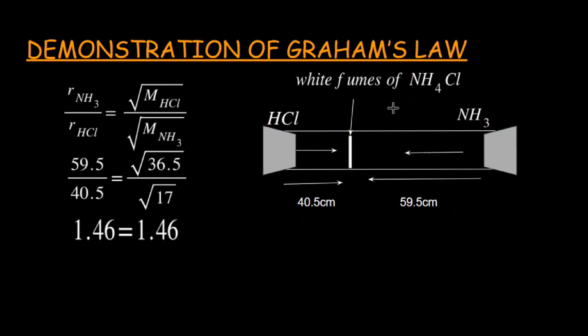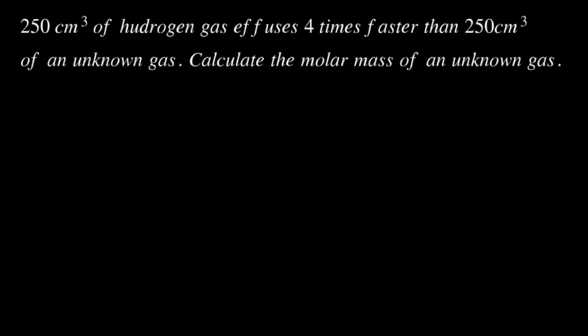Let's discuss a further example. 250 cm³ of hydrogen gas effuses four times faster than 250 cm³ of an unknown gas. What is the molar mass of the unknown gas? Since the volume of both hydrogen and the unknown gas is 250 cm³, volume is constant. In Graham's law, pressure, temperature, and volume must all be constant to relate rate of diffusion with density or molar mass. Let the rate of the unknown gas x equal 1, so the rate of hydrogen is 4. The molar mass of hydrogen is 2 g/mol.